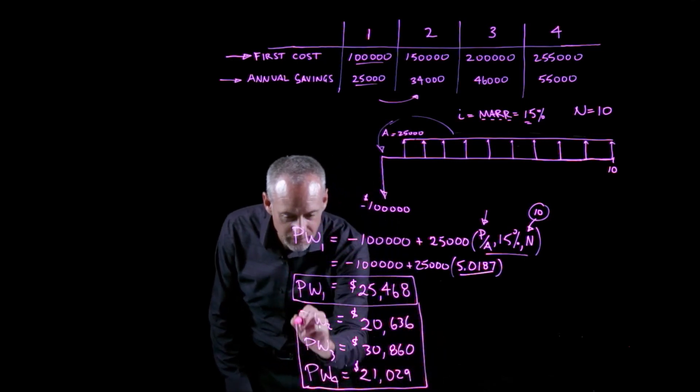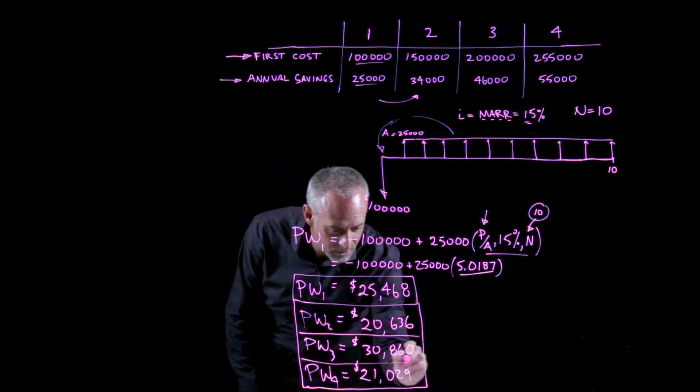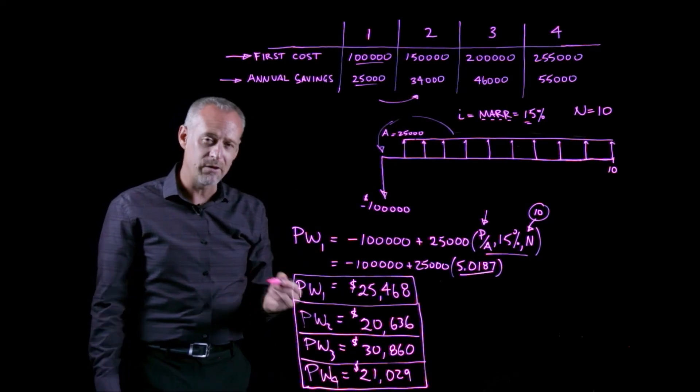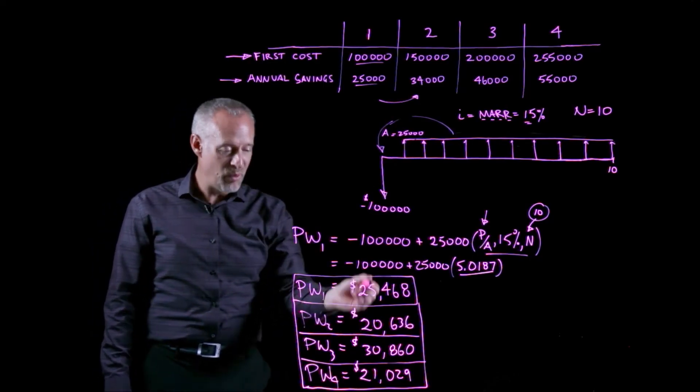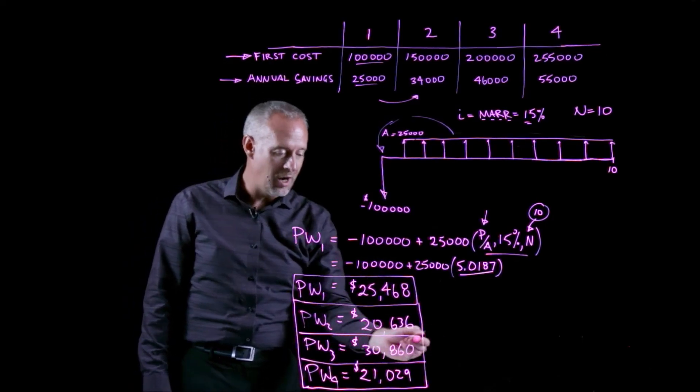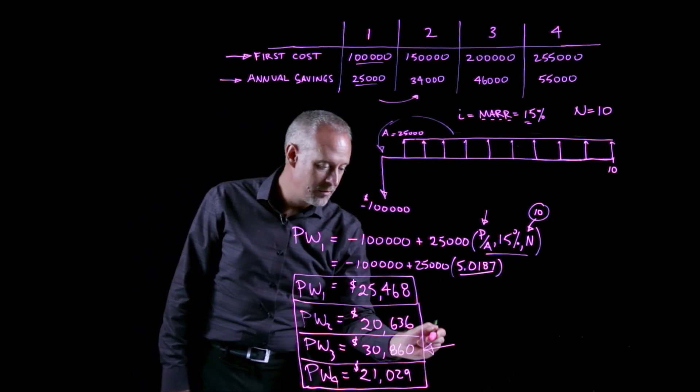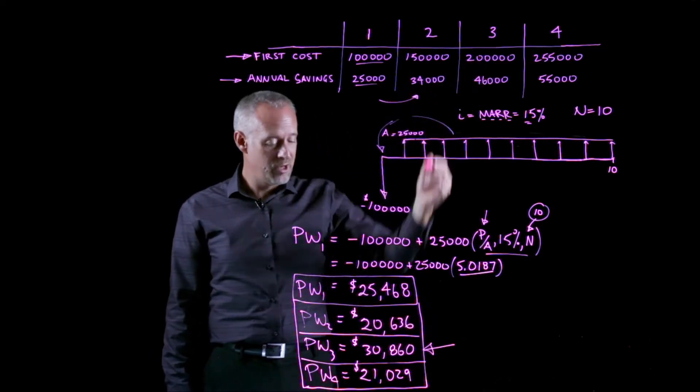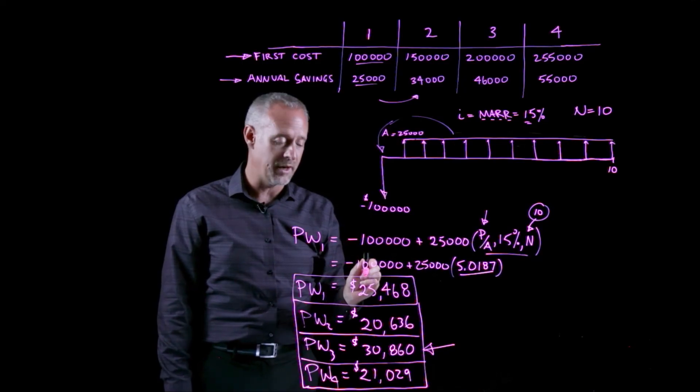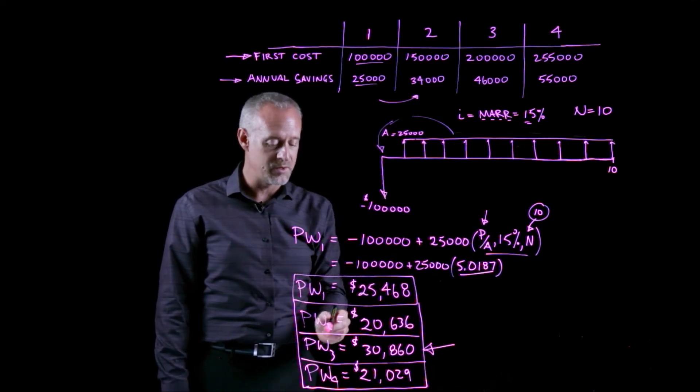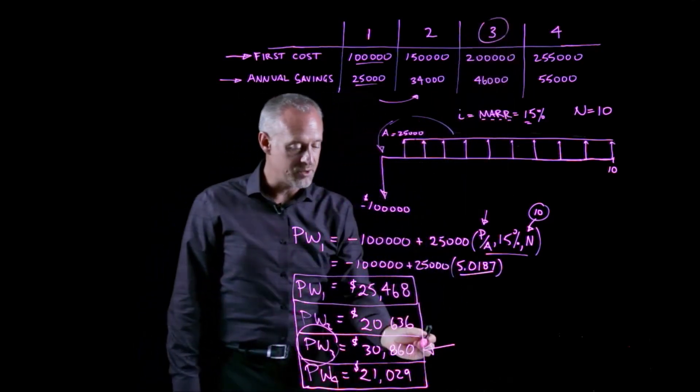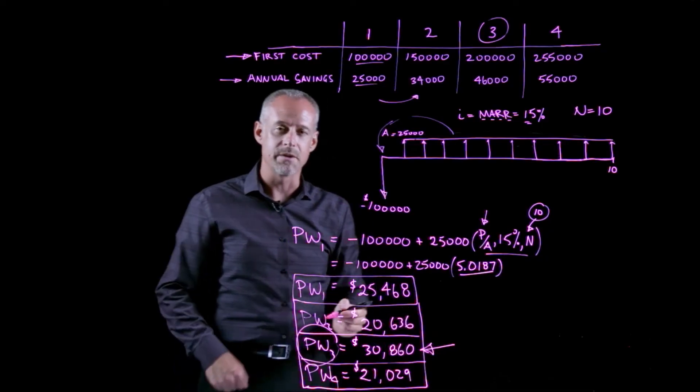So here is the present worth of each of these alternatives. After I've done this, I can compare these numbers, and it should make sense that the highest number, the alternative that produces the highest present value, should be the one that I choose. So in this instance, we would say select option 3 based on the present worth method of analysis.